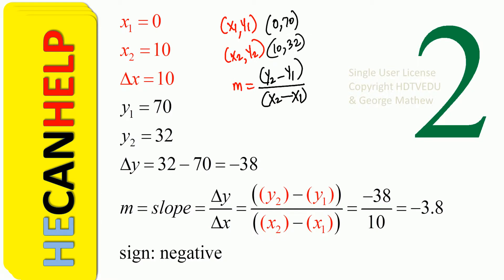We have (0, 70) and (10, 32). So we have x1, y1, x2, y2. That gives us change in x, which is x2 minus x1, and change in y, which is y2 minus y1.